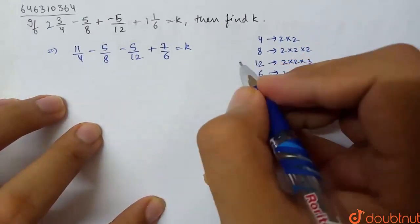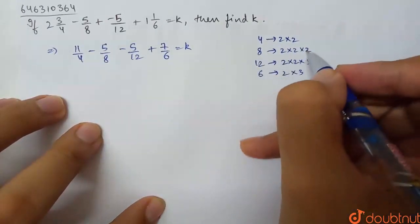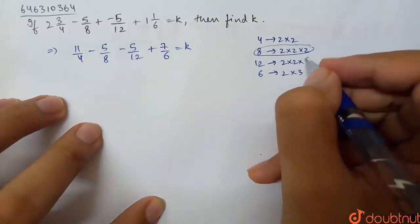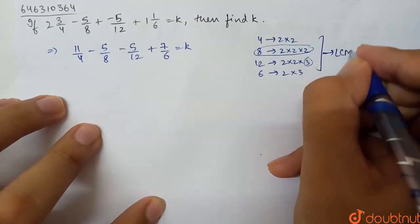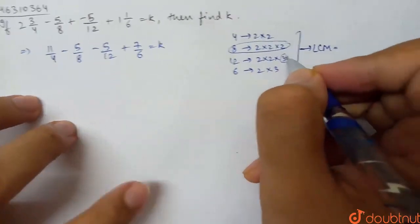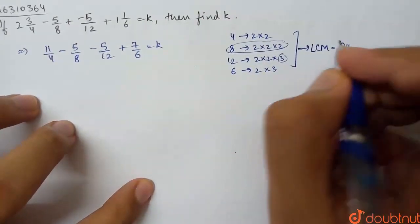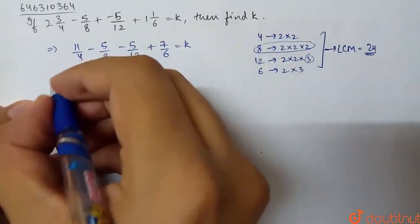For each factor, take the highest power. The highest power of 2 is 2 cubed, and for 3 it's just 3. So the LCM will be 2 cubed times 3, which is 8 times 3, equals 24.